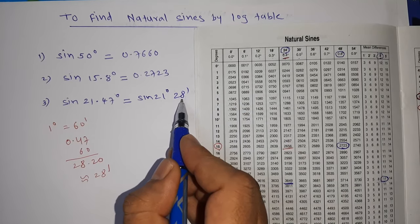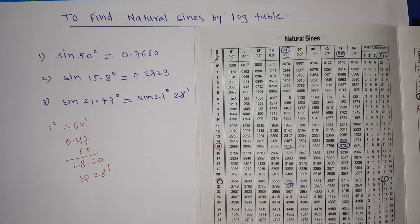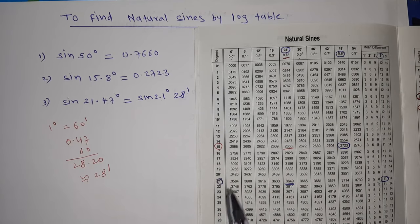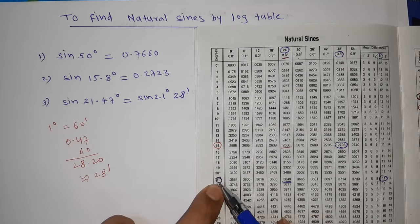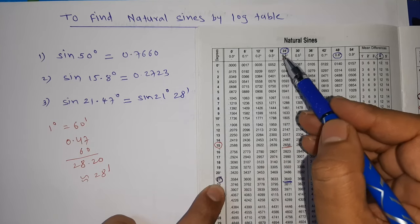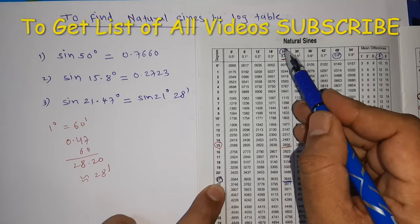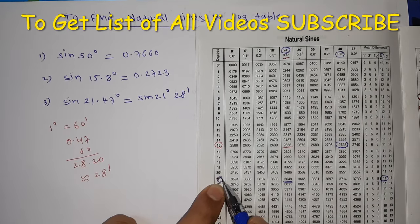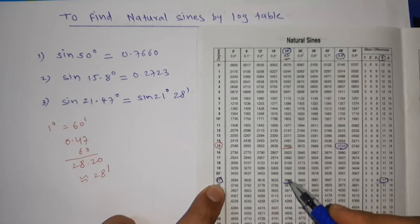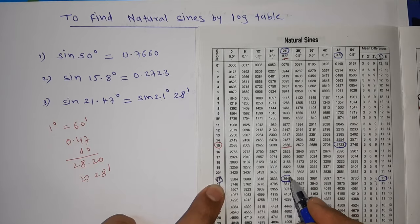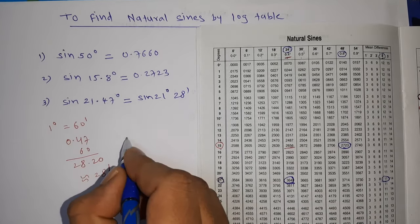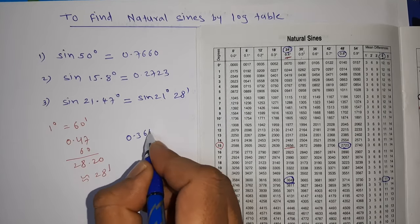So you will write sine 21.47° as sine 21° and 28 minutes. So we will go for sine 21°, 28 minutes. Here we have 24 minutes, here we have 30 minutes. We will see 24 minutes first. So 21°, 24 minutes, we have 3649. 0.3649. We did 24 minutes.